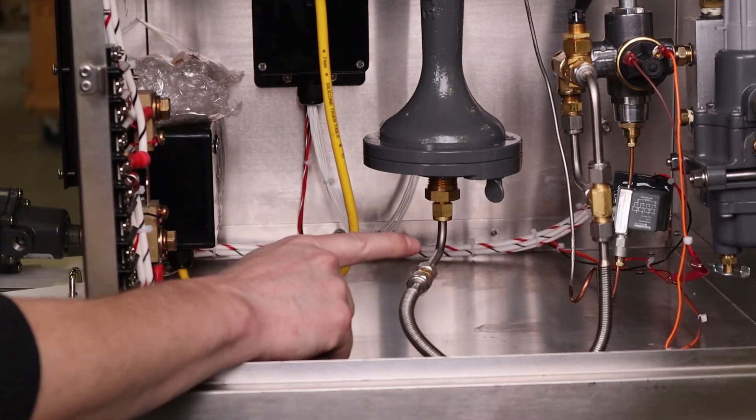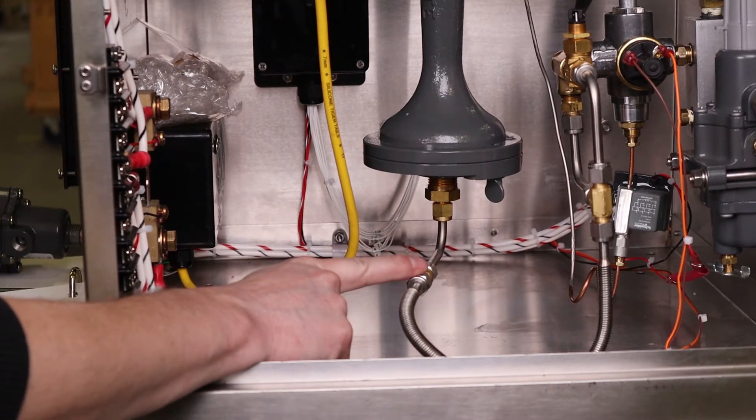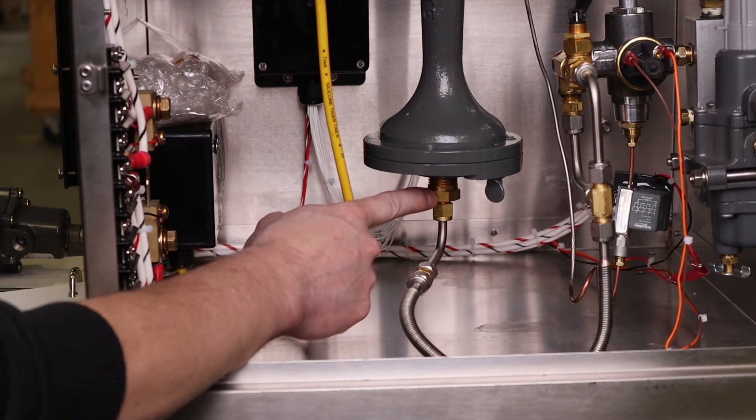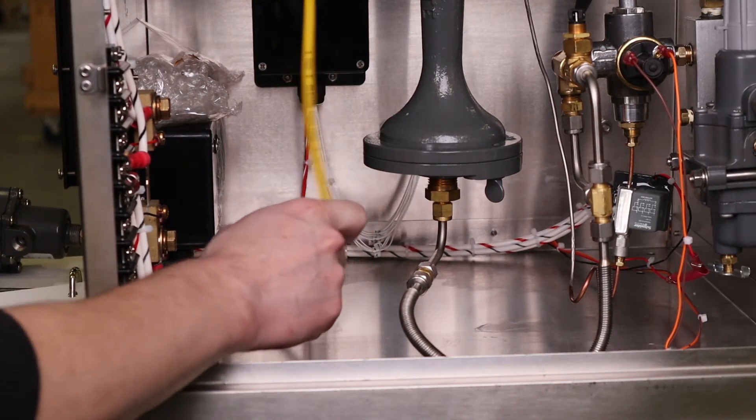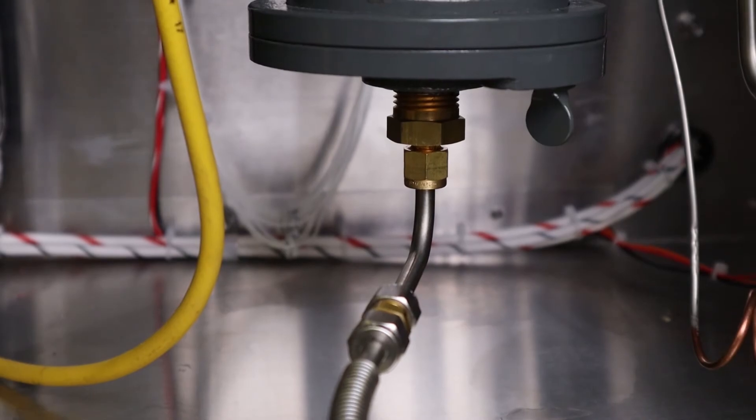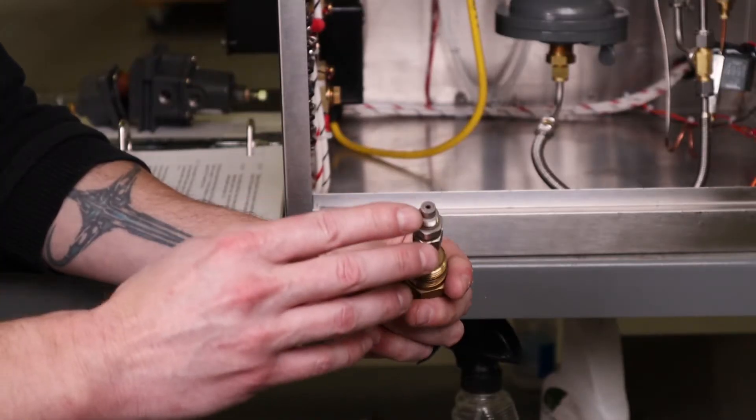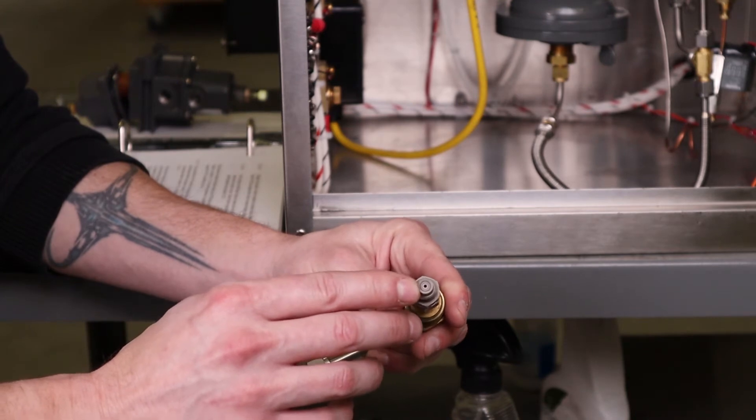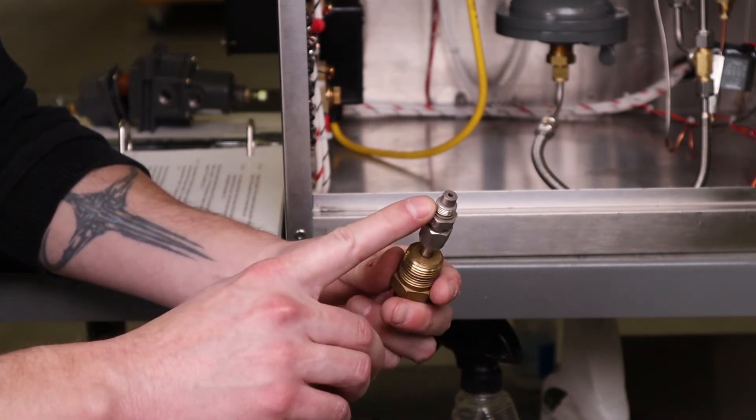Next you'll use a 9/16 wrench to loosen and remove the flexible fuel line and a 7/8 wrench to remove the fuel orifice. Inspect the tip of the orifice for any debris or clogging and if so, remove and replace it.